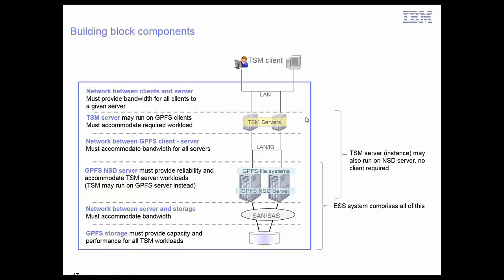This architecture is fairly complex with the GPFS client-server topology. You can simplify it by using an ESS, which replaces the entire second half of the picture — ESS includes the NSD server, the network, and the storage itself. You can run the TSM server on NSD servers. This doesn't work with ESS, unfortunately; if you want to run TSM server instances on GPFS NSD servers, you cannot use ESS and need to use native deployment. But ESS does take out several components, like the network between the GPFS client and the GPFS client running the TSM servers.